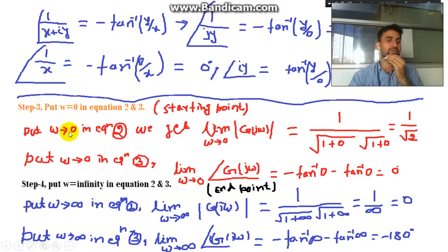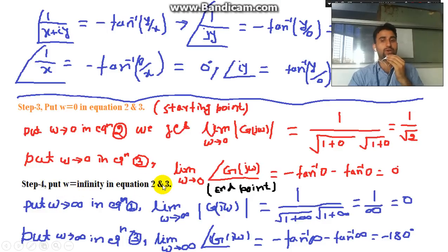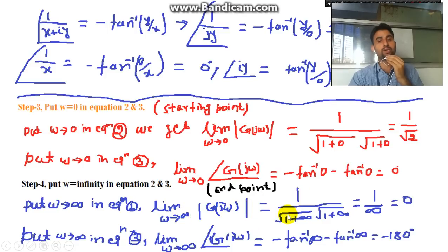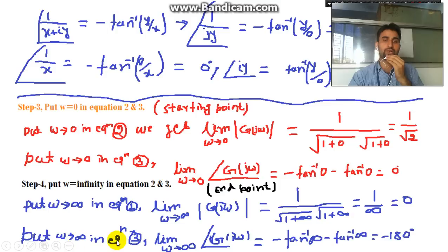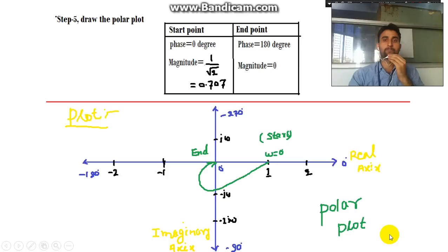Step 4: We'll put ω → ∞ in Equations 2 and 3. When ω → ∞, |G(jω)| = 1 / [√(1 + ∞) × √(1 + ∞)] = 1/∞ = 0, so magnitude = 0. For the phase: angle = minus tan⁻¹(∞) minus tan⁻¹(∞) = minus 90° minus 90° = minus 180°.